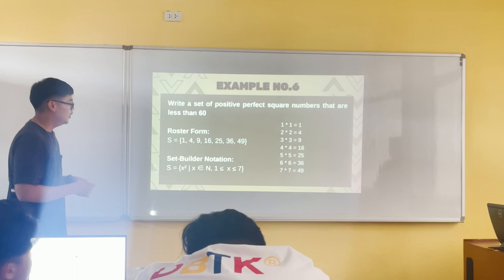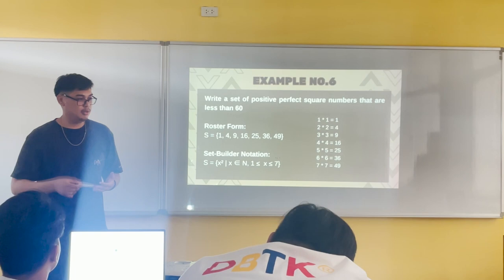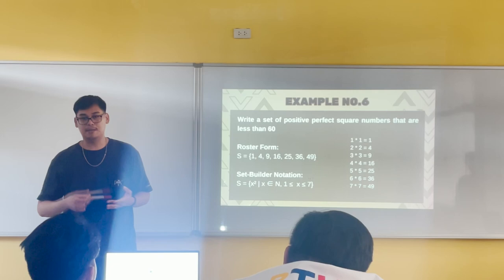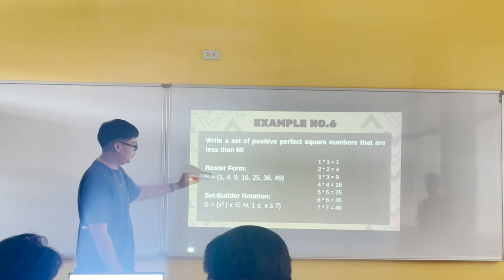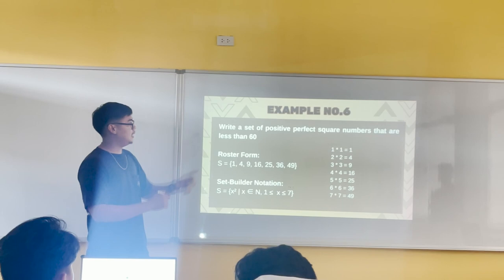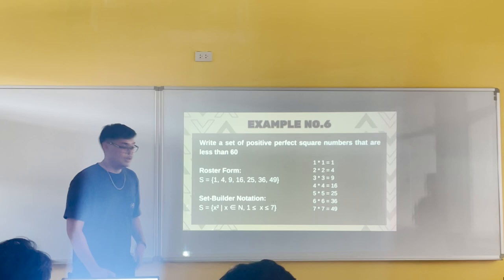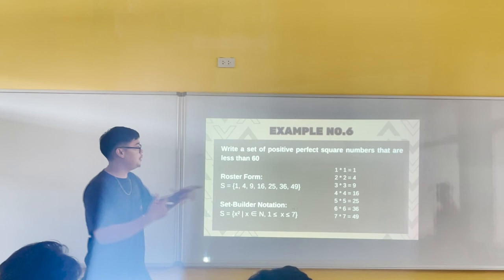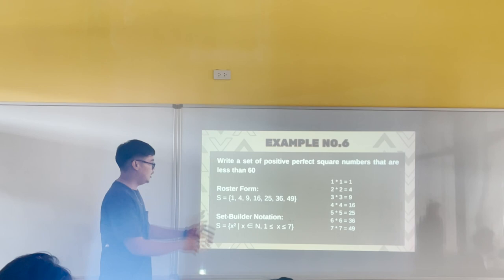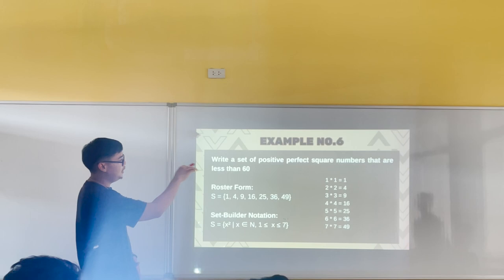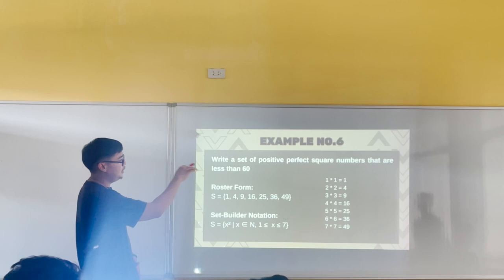Positive perfect square numbers that are less than 60. Perfect squares are a number multiplied by itself: 1×1, 2×2, 3×3, 4×4, and so on. So the set starts at 1, 4, 9, 16, 25, 36, 49. We stop at 49 because 8×8=64 goes beyond 60. For the set builder notation, x should be squared, so set S = {x² | ...}.